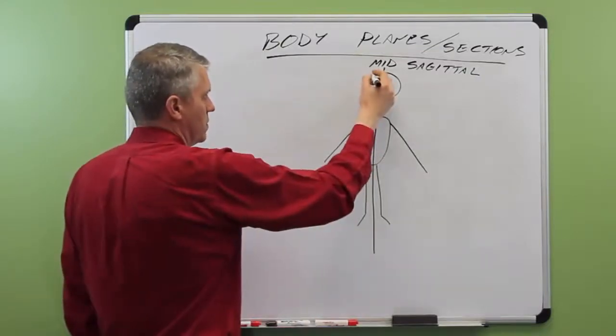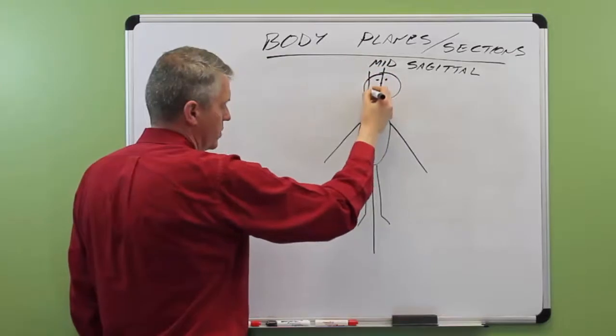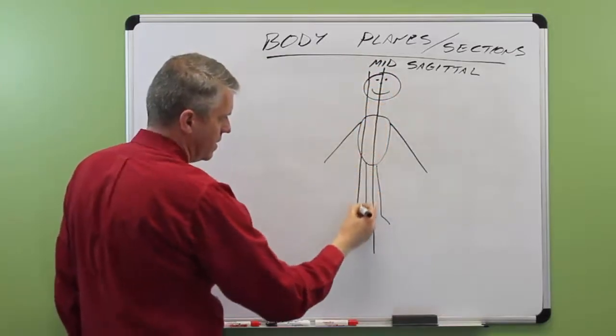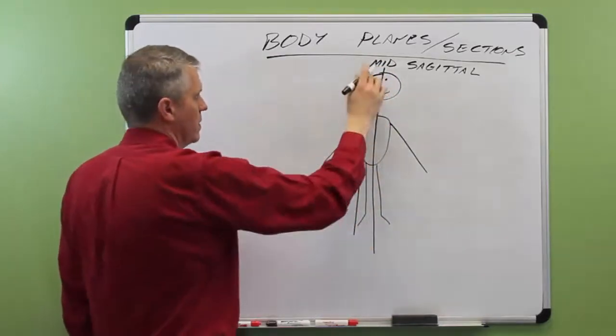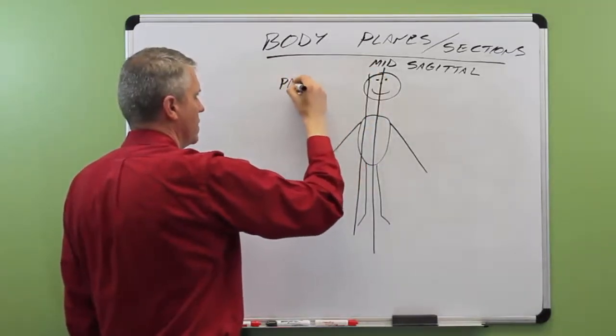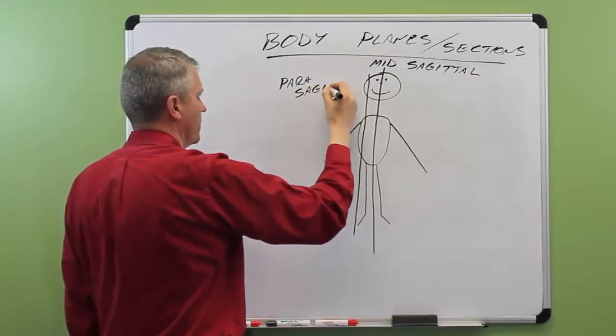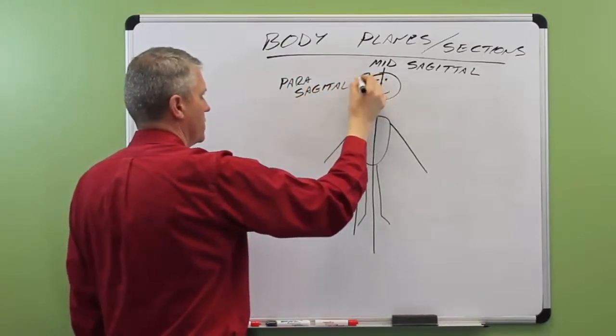We could also do the same kind of straight up and down with him facing forward kind of plane or slice down through the body. And notice that we're a bit off-center here, so this is what's known as a parasagittal plane. Parasagittal. That's what this one is.